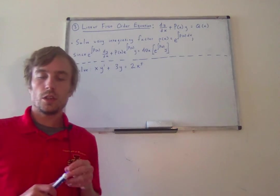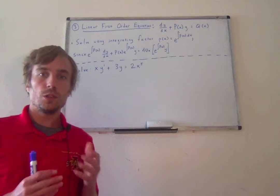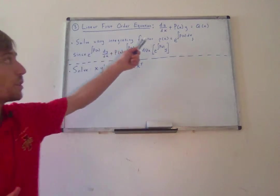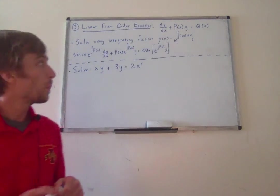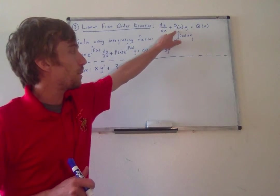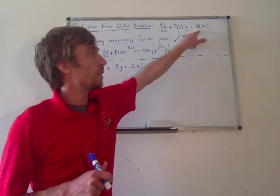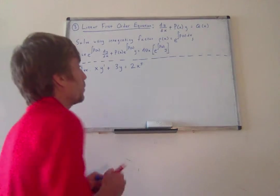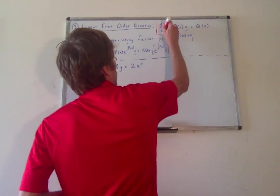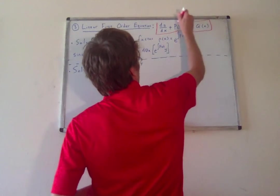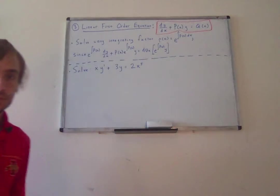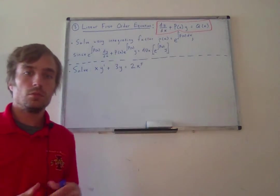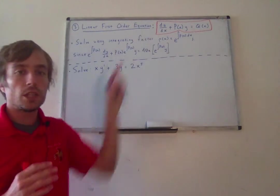Here I'm going to be talking about problem number three on the review sheet, which is a linear first-order equation. These are equations in the following form, where I've got dy/dx plus some function of x times y equals some function of x. In order to use the techniques we're going to use, the equation has to look like that. So really take care to make sure that before you do this, you're putting the equation in the correct form.